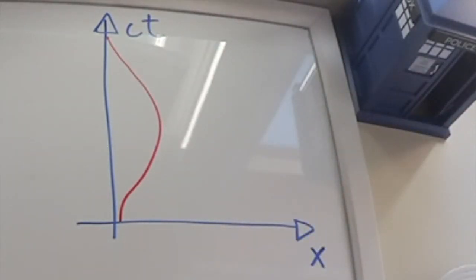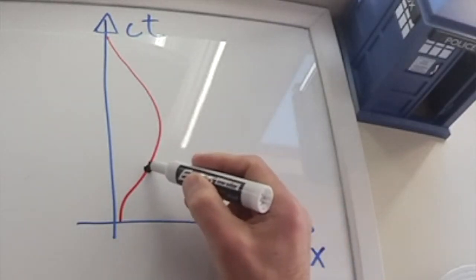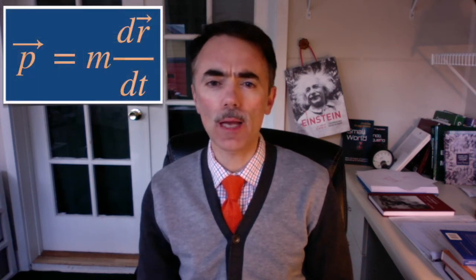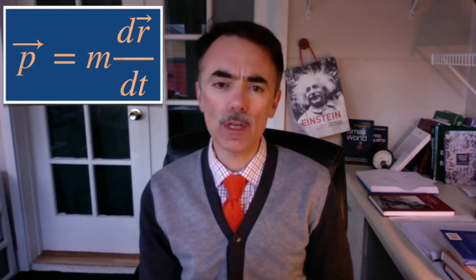And let's define the relativistic momentum as the vector tangent to the worldline of the particle. In Newtonian physics, momentum is the mass times the derivative of the vector position with respect to time. So, dr vector over dt.